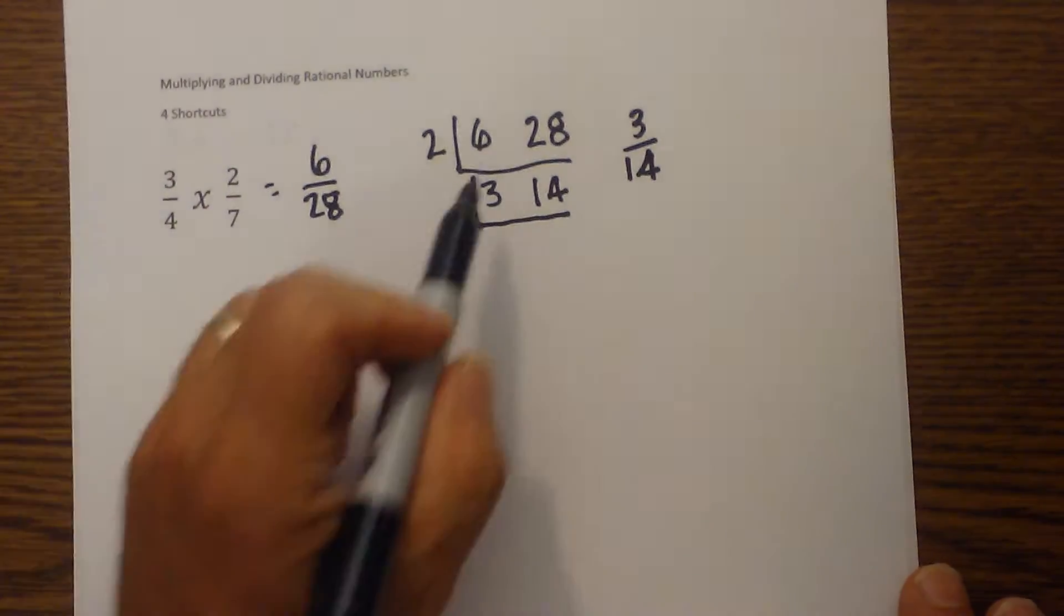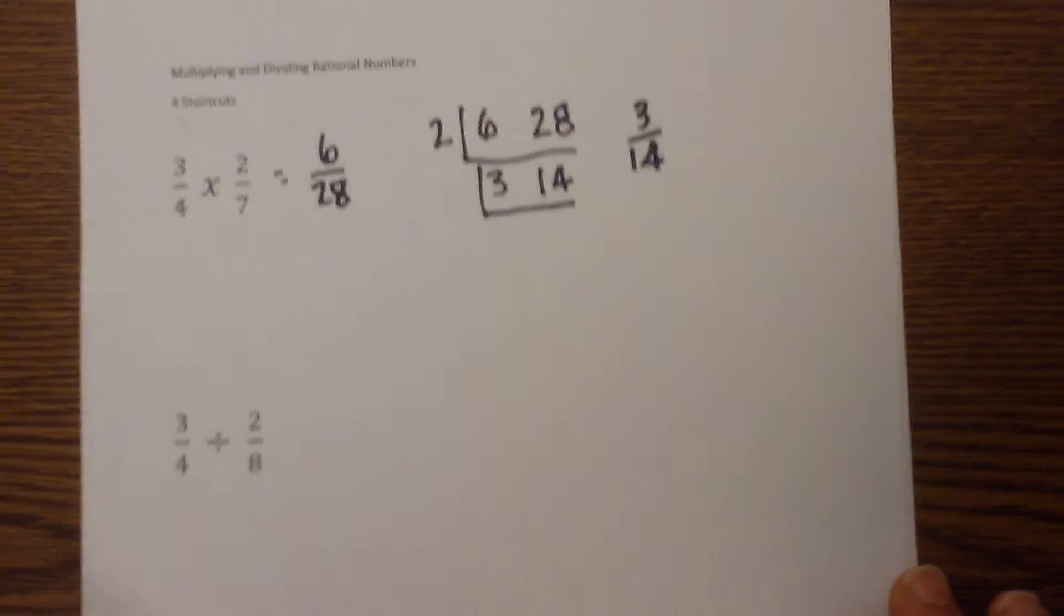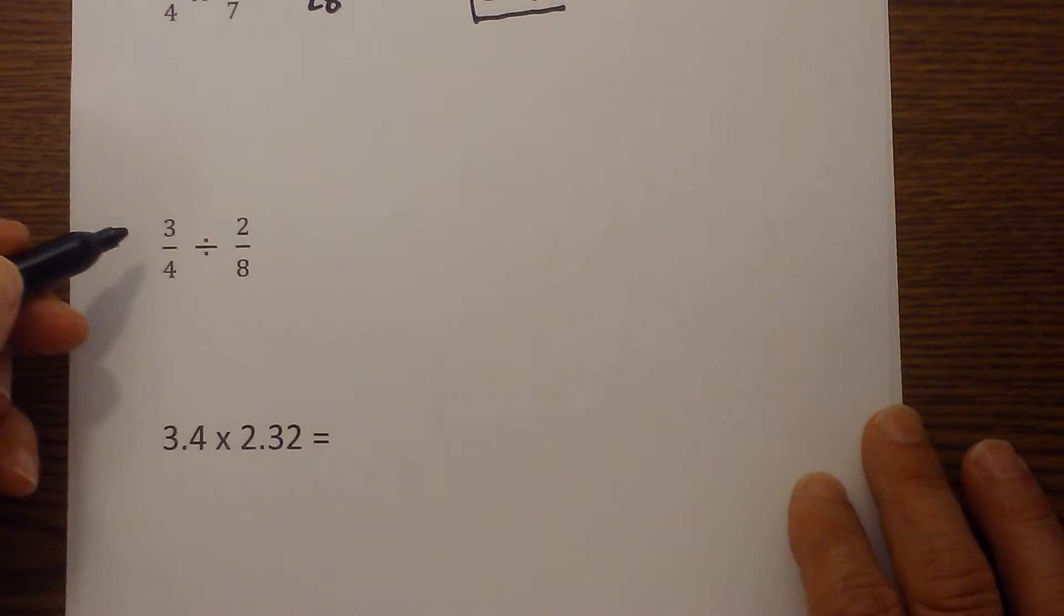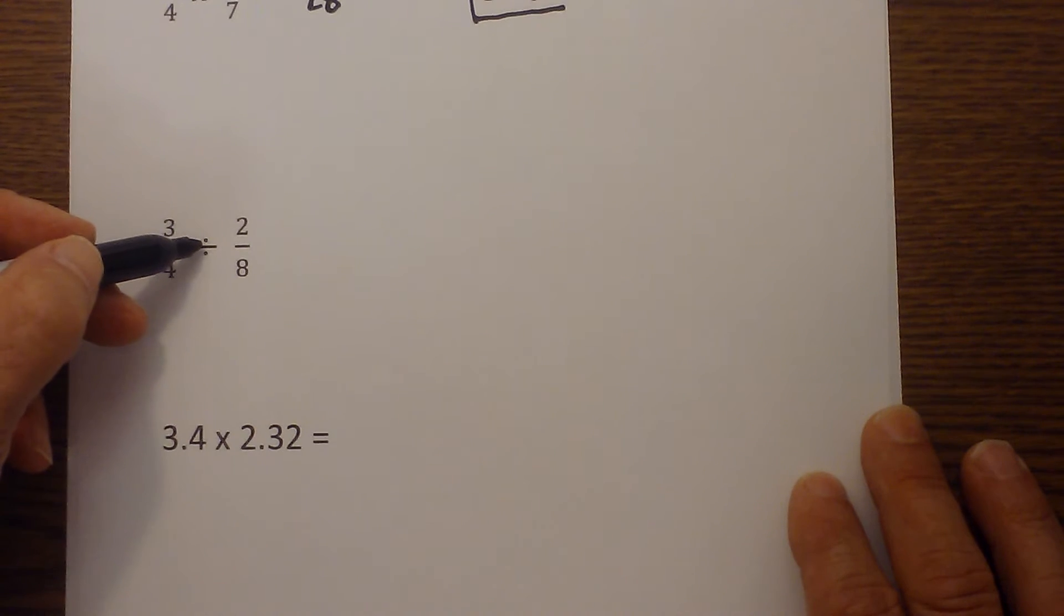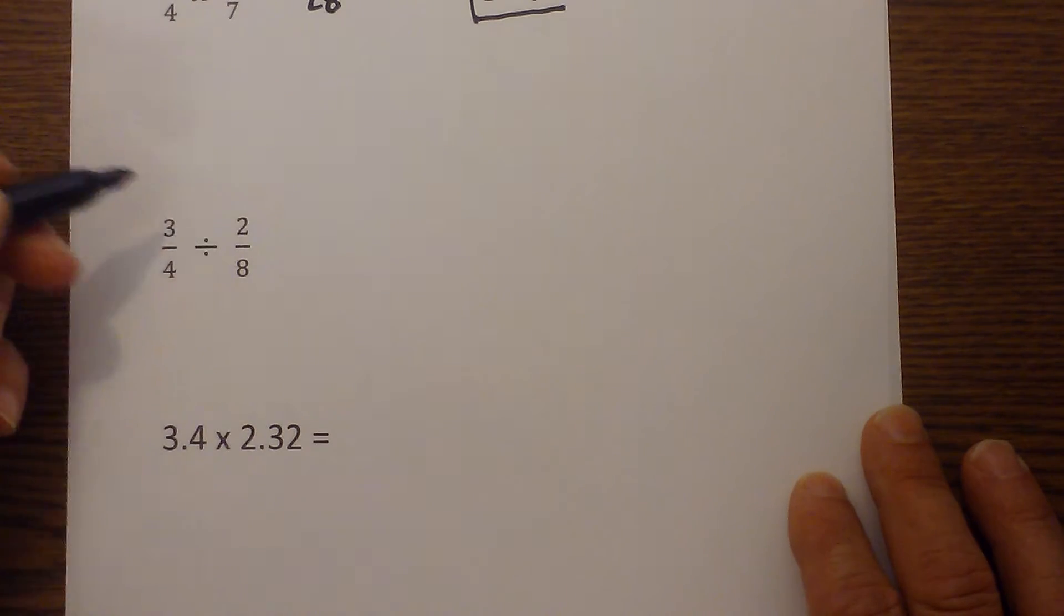So that's a nice way to simplify. Next, when you divide fractions, you use the rule: you keep the first fraction the same, change the sign, flip the last fraction.